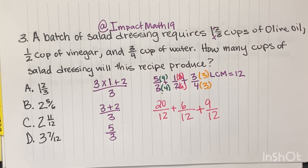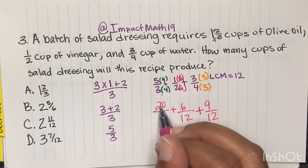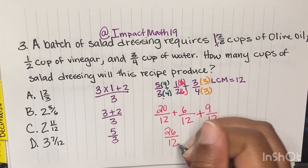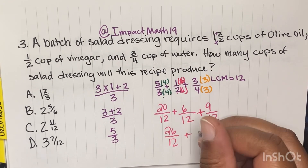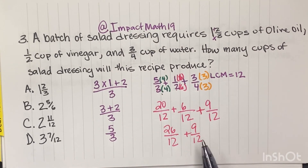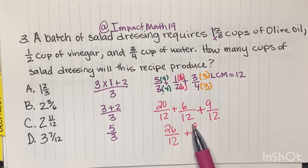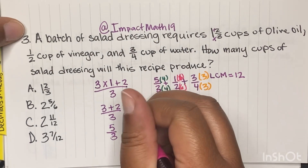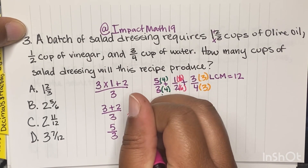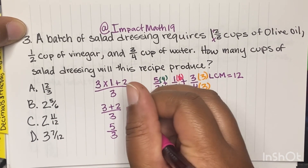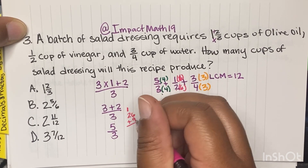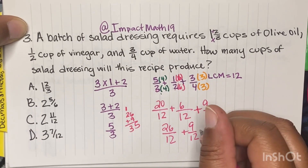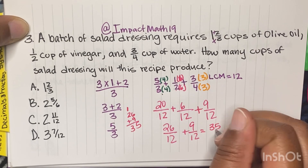Now we're going to add our numerators. 20 plus 6 gives us 26 over 12 — remember, your denominator stays the same — plus 9 twelfths. 26 plus 9: 9 plus 6 gives us 15, carry the 1, and 2 plus 1 gets us 35. So we equal 35 over 12.